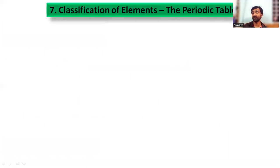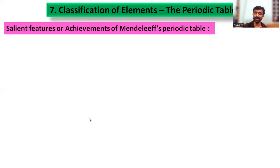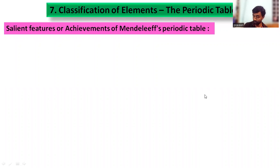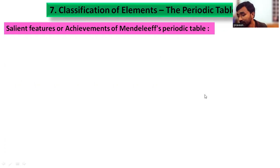What are the salient features or achievements of Mendeleev? In previous classification attempts like Döbereiner's law of triads or Newlands' law of octaves, physical and chemical properties were not discussed. Those earlier attempts just tried to give a periodic classification by grouping elements.